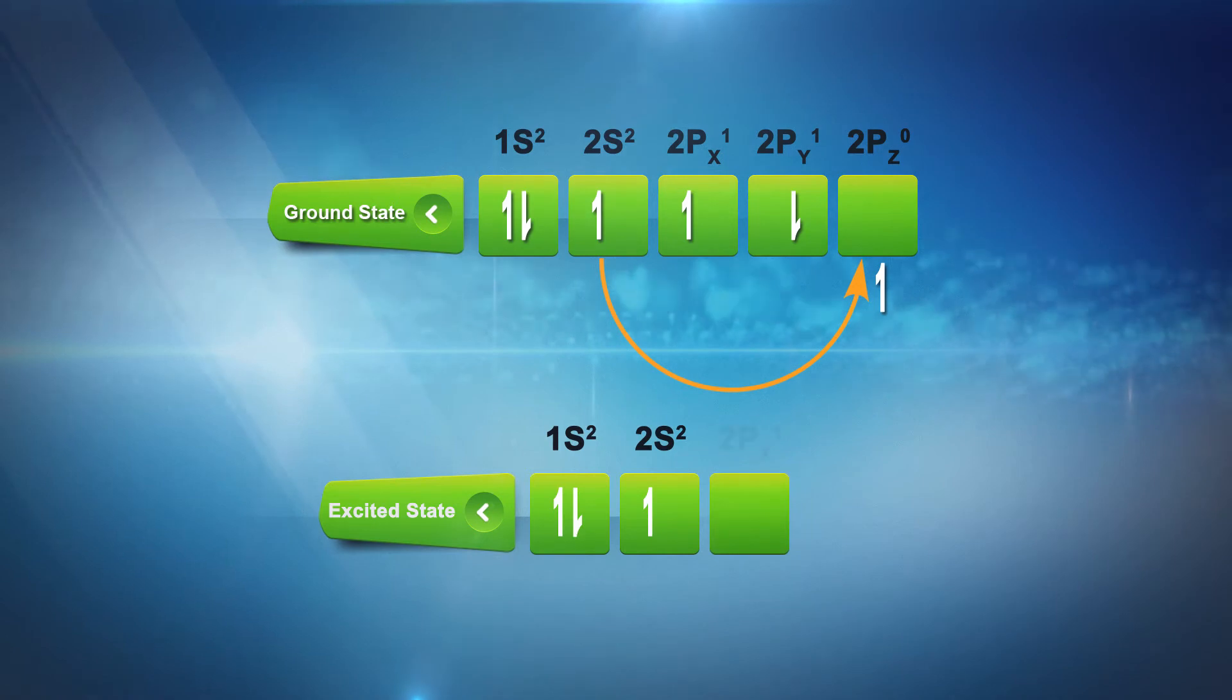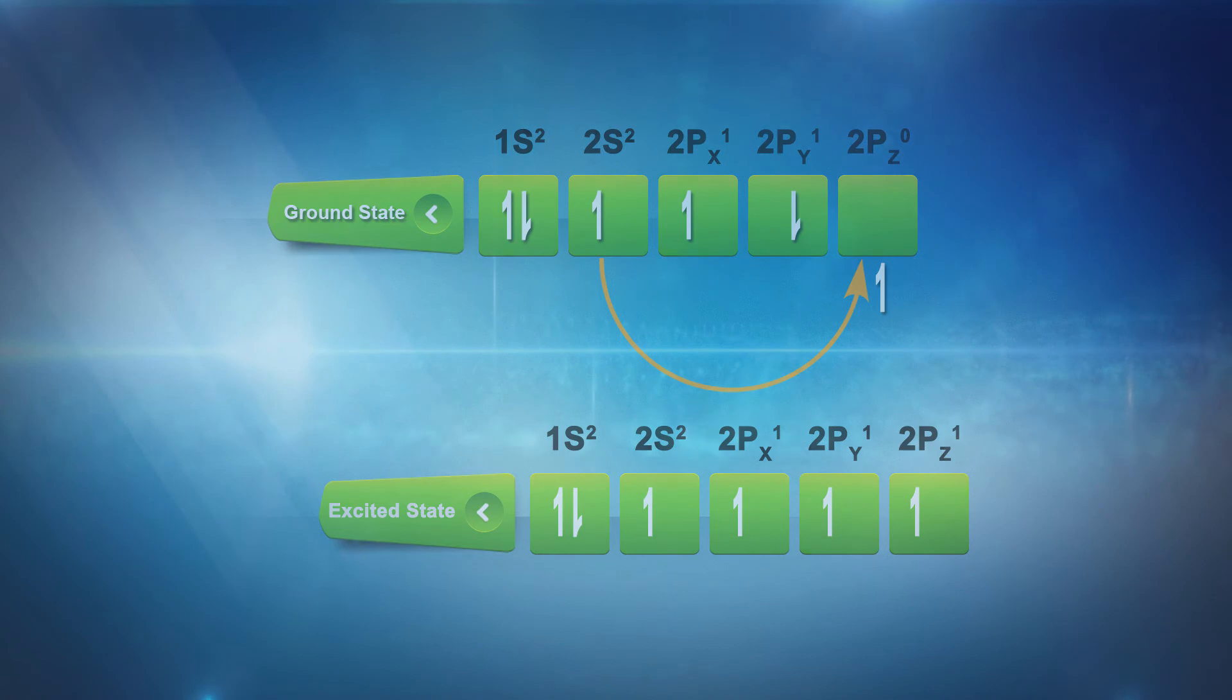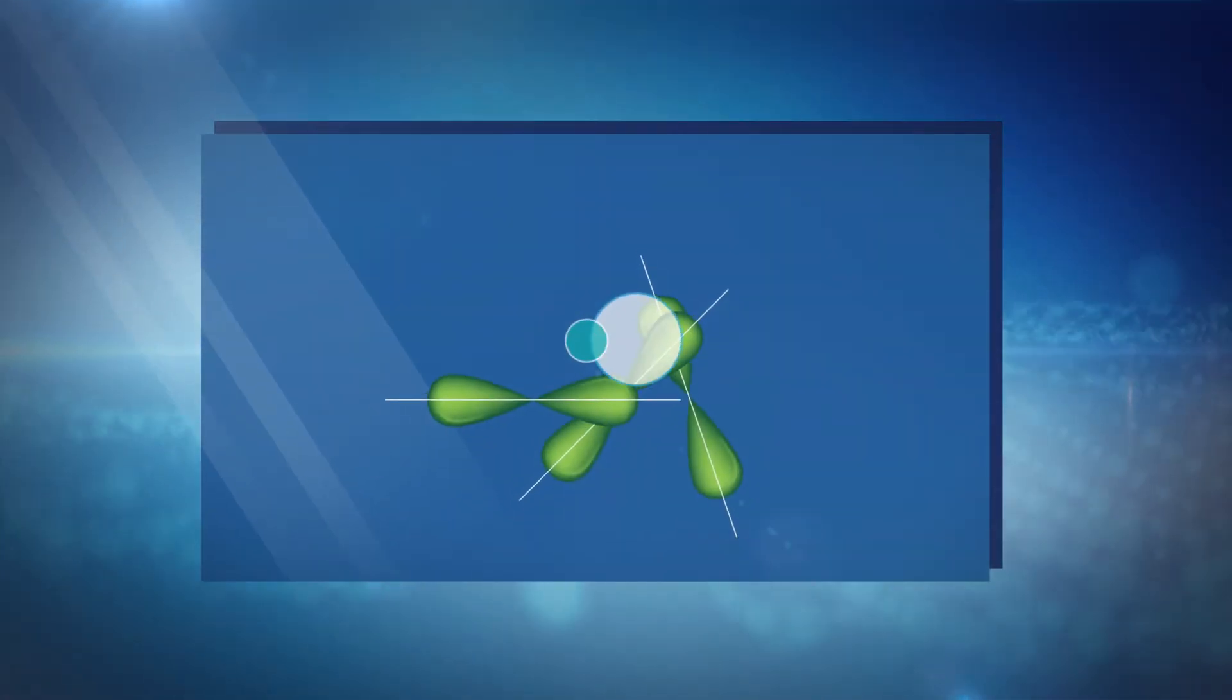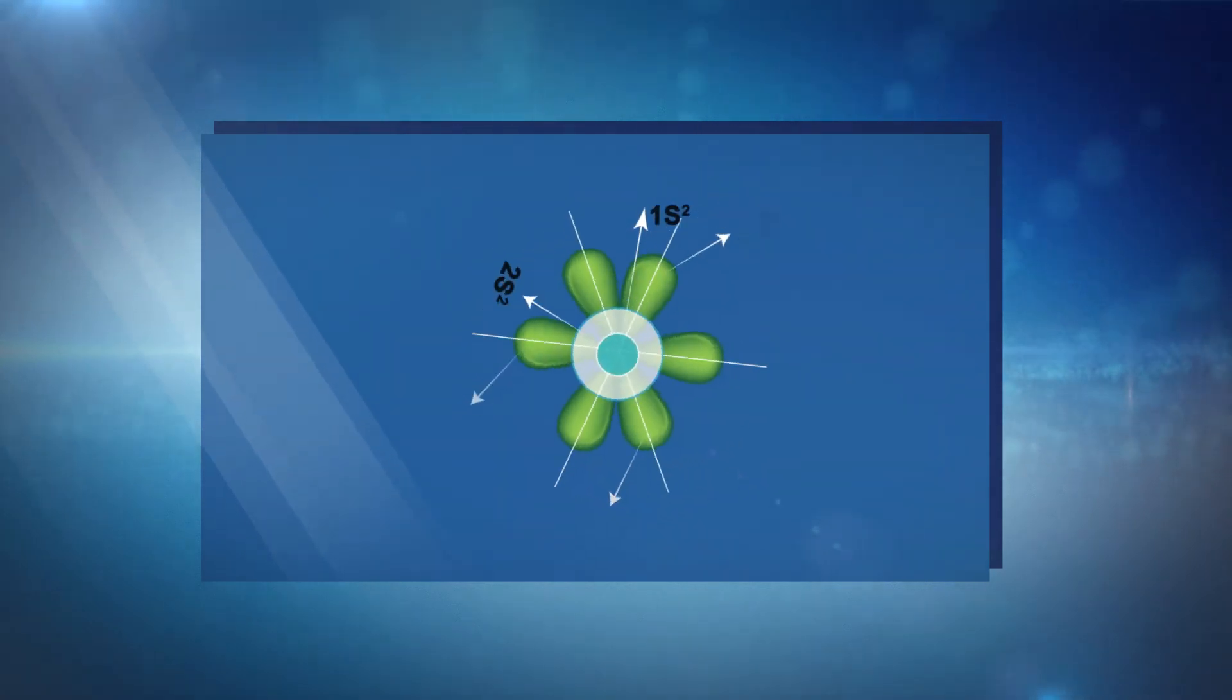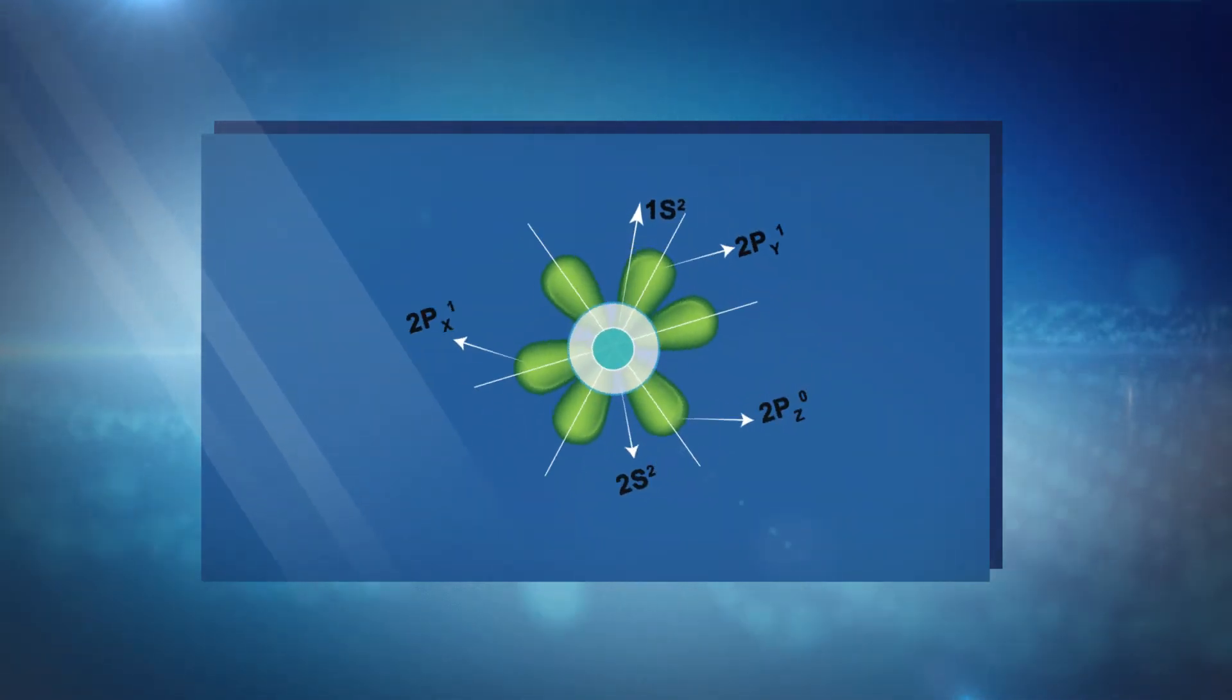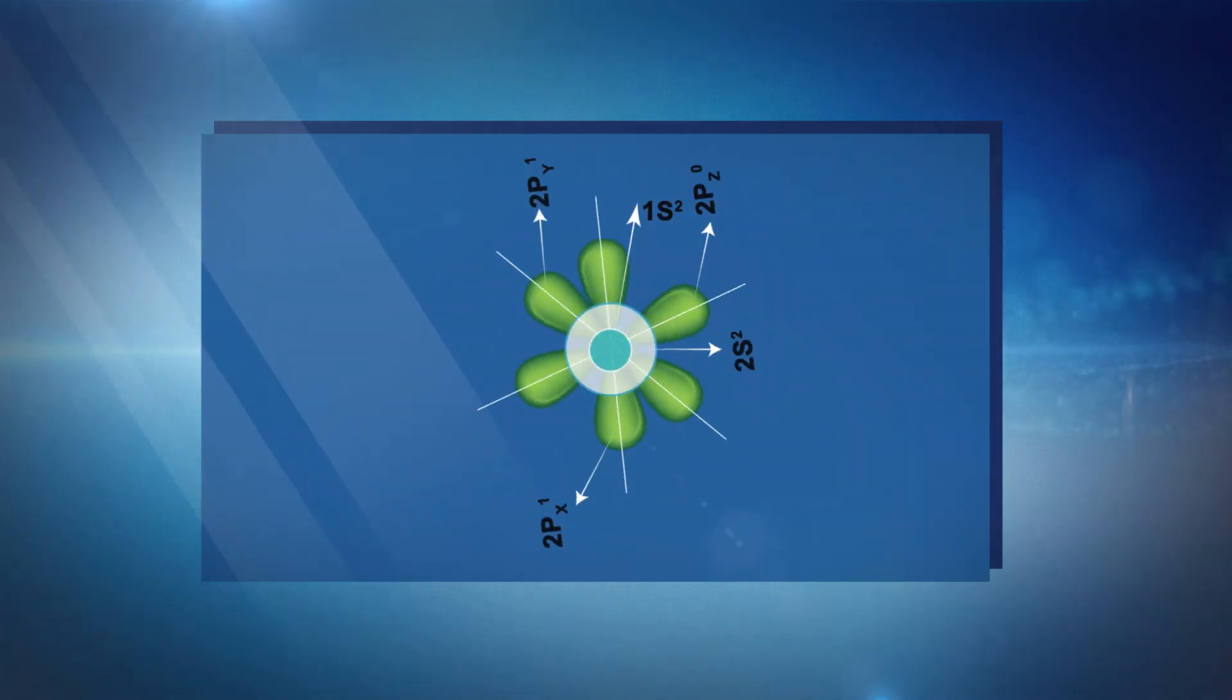The structure of carbon atom after excitation changes. Now the four orbitals—2s, 2px, 2py, and 2pz—intermix.